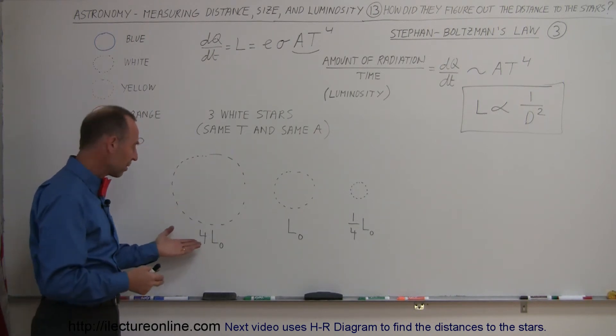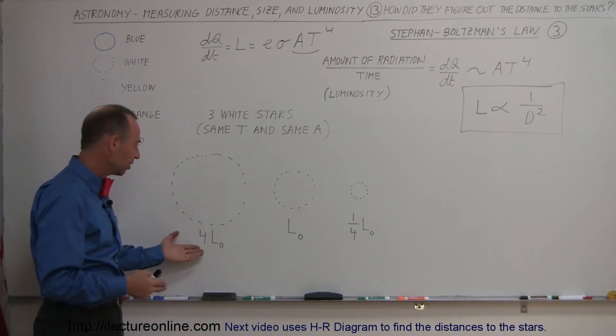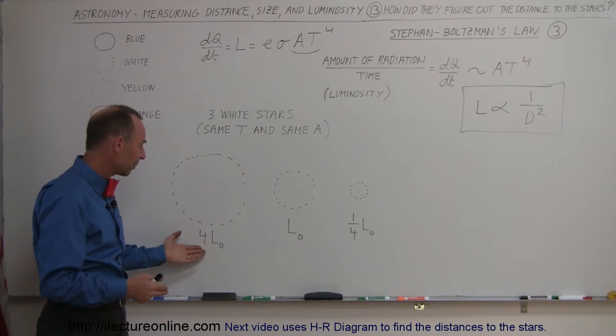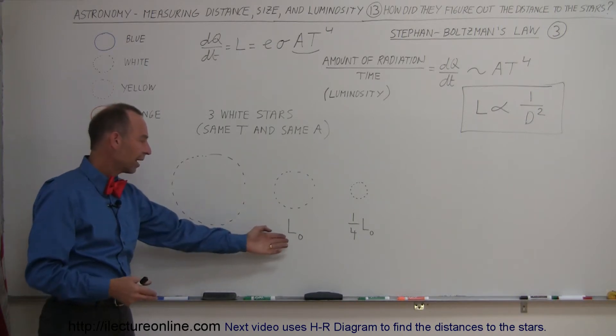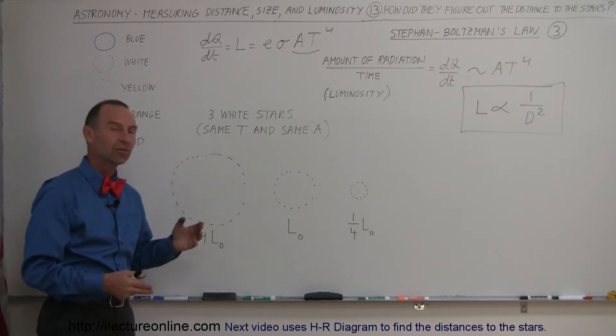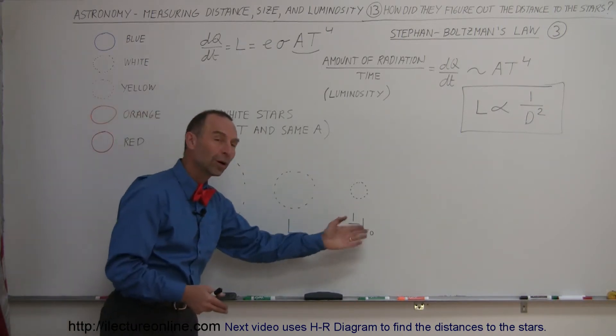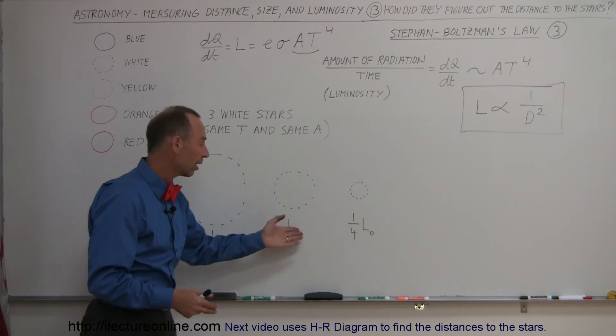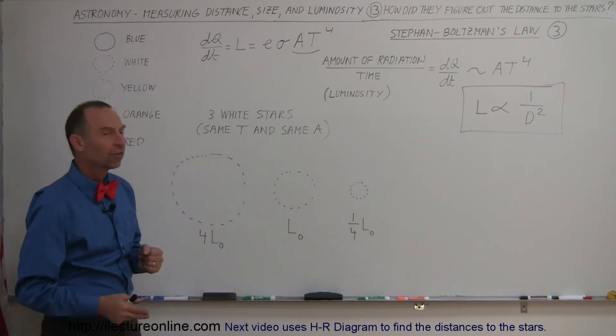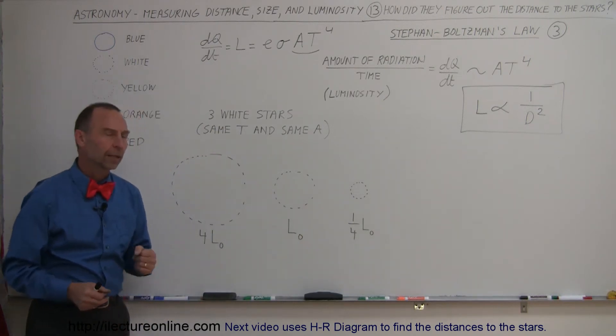We measured the luminosity of one star to be four times as much as the second star, and the third star has only one quarter the luminosity of the second star.